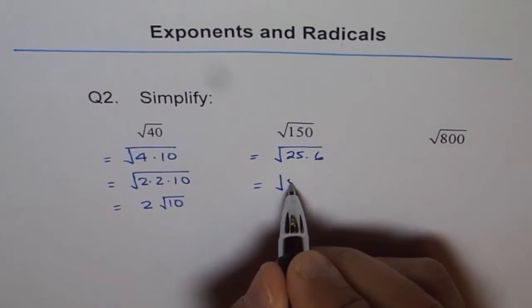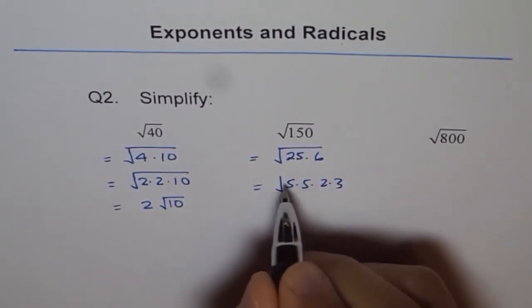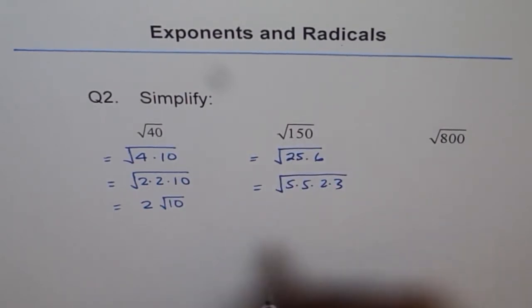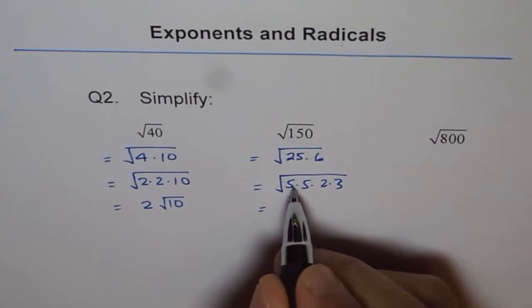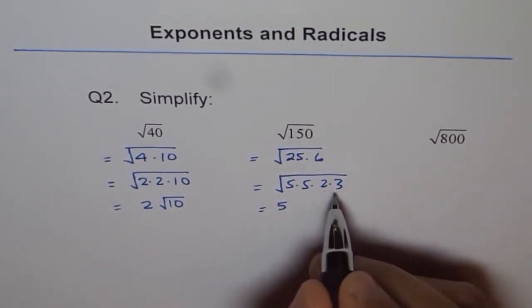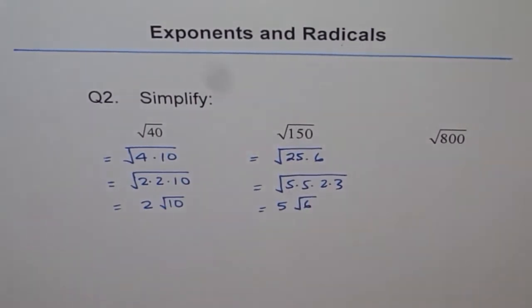This can be written as 5 times 5 times 2 times 3—that's prime factorization. Now 5 repeats, so we can factor out one of the 5s, but we can't factor out anything else. So we write it as 5 times square root of 6. That is square root of 150.